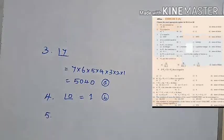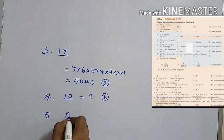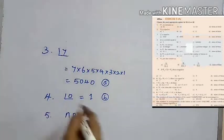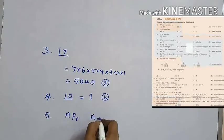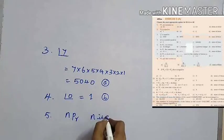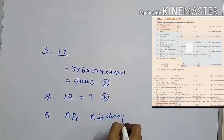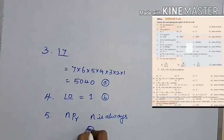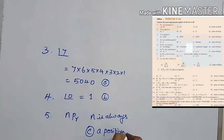Fifth question: In NPR, N is always — the answer is N is always a positive integer. Option C is the answer.